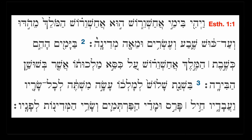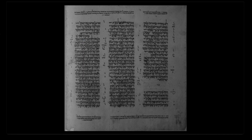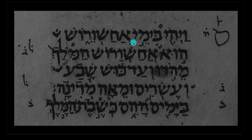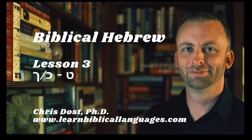If you're interested, go ahead and try to identify the letters from Esther 1:1 in the manuscript — I'll zoom in for you. Remember, start on the right: Vav, Yud, He, Yud — Beit, Yud, Mem, Yud — Aleph, Chet, Shin — Vav, Resh, Vav, Shin — He, Vav, Aleph — Aleph, Chet, Shin, Vav, Resh, Vav, Shin, and so on. Go ahead and pause the recording if you want to try to identify the rest of the letters on your own. Well, great job today everybody. We've made it through three lessons of Biblical Hebrew — you should be very proud of the progress you're making, and I can't wait to see you for the next video. Take care everybody.